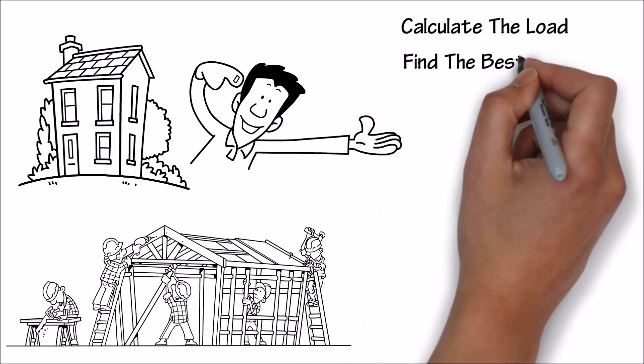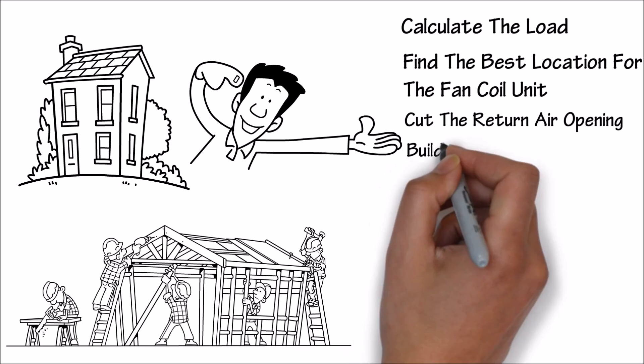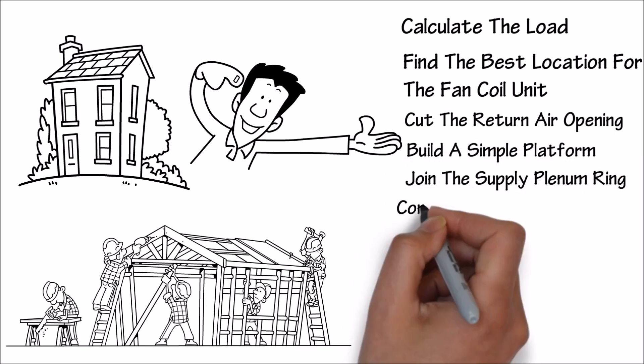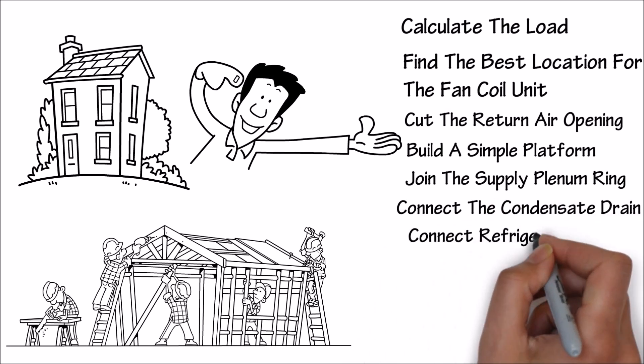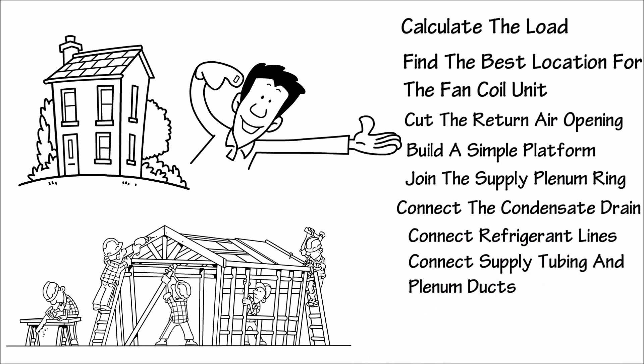Calculate the load. Find the best location for the fan coil unit. Cut the return air opening. Build a simple platform. Join the supply plenum ring. Connect the condensate drain. Connect refrigerant lines. Connect supply tubing and plenum ducts. Fix terminator outlets. Sound attenuation tubing. And the supply tubing.